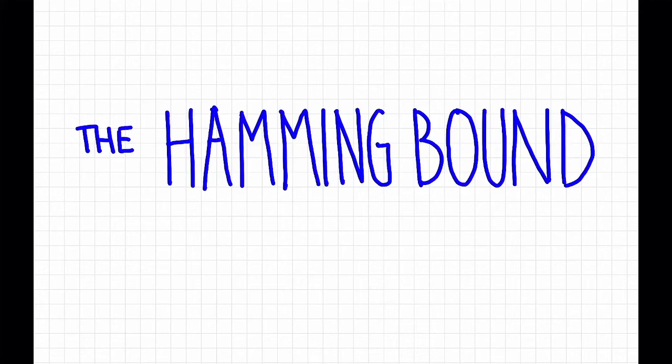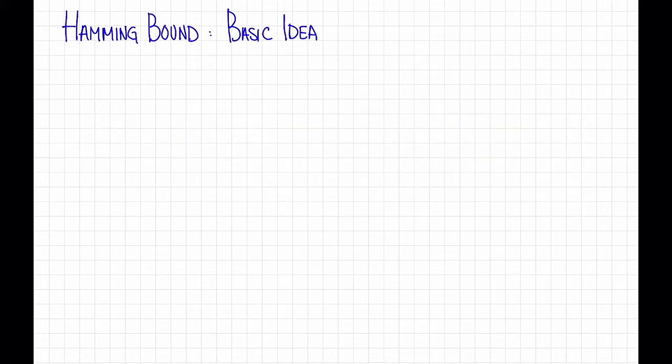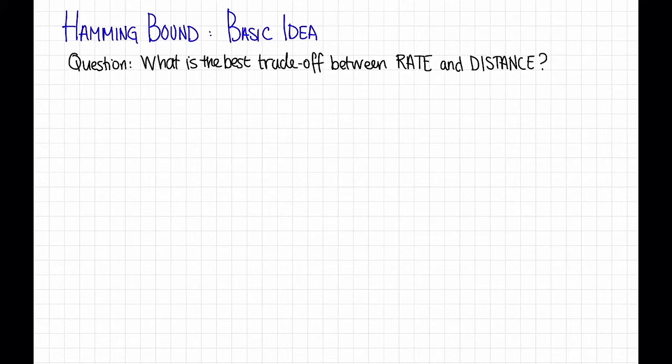In this video we'll see our first bound on the trade-off between rate and distance known as the Hamming bound. Last time we left off with the question: what is the best trade-off between rate and distance? The Hamming bound establishes some limitation on how good this trade-off can be.